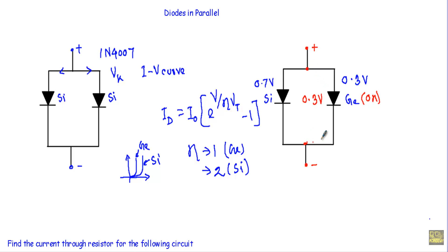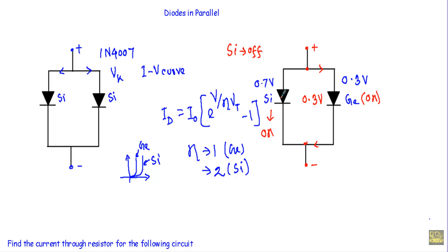When the germanium diode is ON, it maintains a voltage difference of 0.3V across its terminals, so most of the current from the source is drawn by the germanium diode. Because of this fixed 0.3V difference, it is not possible for the silicon diode to turn ON — 0.3V is insufficient to forward-bias the silicon diode. Therefore, the silicon diode remains in the OFF state and must be replaced with an open circuit. This is why we cannot connect two dissimilar diodes in parallel.